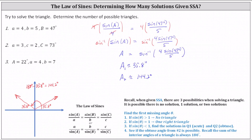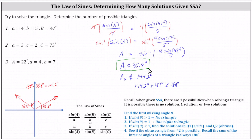To check this, we need to add this angle to the given angle B, which is 47 degrees. Notice 144.2 degrees plus 47 degrees is greater than or equal to 180 degrees, which means there is no possible second triangle. There's only one possible triangle, which is when A is approximately 35.8 degrees. For number one, there's one possible triangle. If the sum of the obtuse angle and the given angle B was less than 180 degrees, there would be two possible triangles.